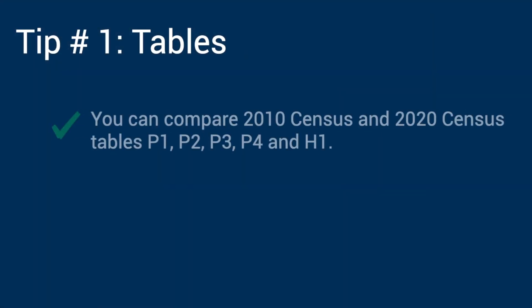Tip number one: you can compare tables P1, P2, P3, P4, and H1 from the 2010 Census and the 2020 Census. These tables have the same data fields and universe.